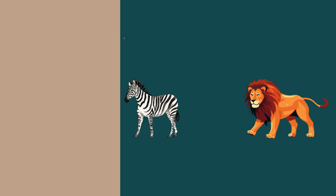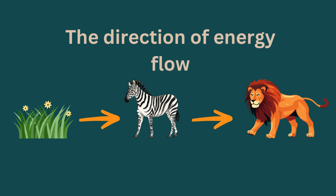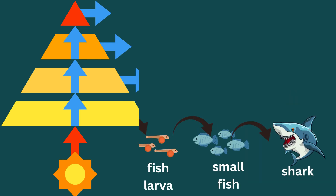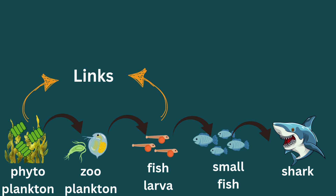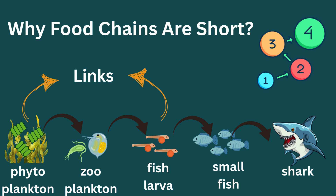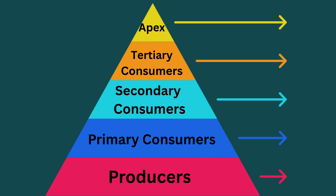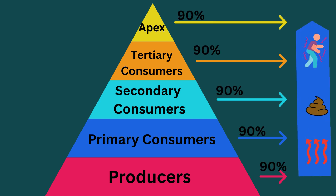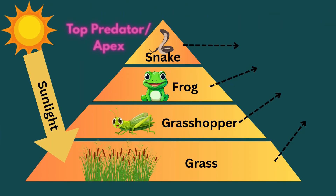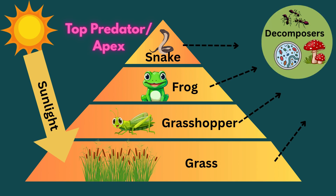Arrows in a food chain show the direction of energy flow — from the food to the feeder. Food chains usually have four links, not more than five. Why are food chains so short? That's because energy is lost at each level through heat, movement, and waste. Almost 90% of energy is lost from each level, and only 10% is transferred to the next level. The food chain ends with the top predator, an animal that isn't hunted by others. When it dies, decomposers break it down.